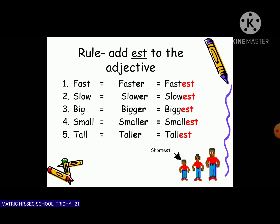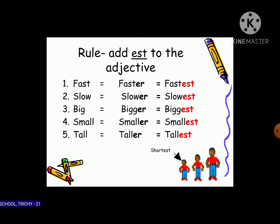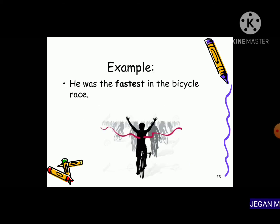For example: fast (positive) → faster (comparative) → fastest (superlative). We add -er for comparative and -est for superlative. Slow → slower → slowest. Big → bigger → biggest. Small → smaller → smallest. Tall → taller → tallest.